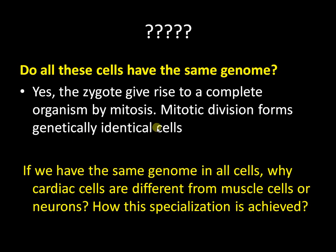If we have the same genome in all these cells, why are cardiac cells different from muscle cells, or muscle cells different from neurons? How is this achieved? The process is called cell specialization.